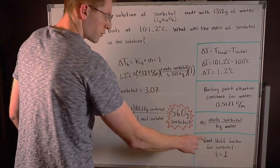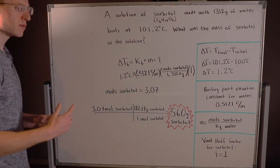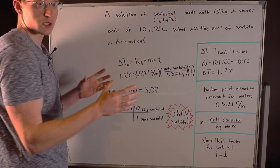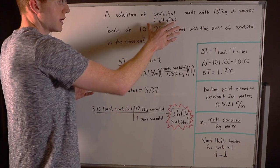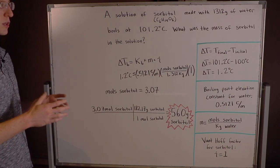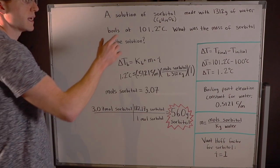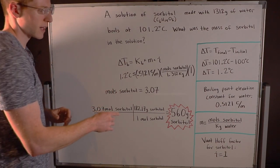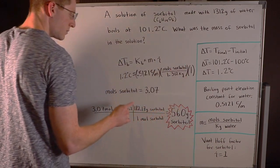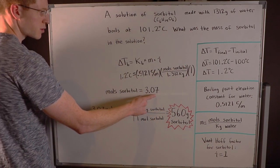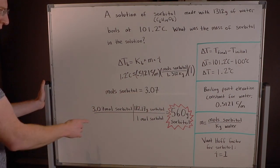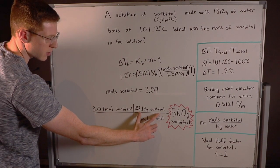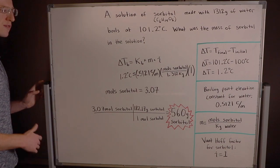The van't Hoff factor here for sorbitol is 1. You can think about the van't Hoff factor as basically the number of things that your solute is going to split up into. When you put sorbitol into water, it's not going to split up into multiple molecules or ions. Something like NaCl, table salt, splits up into two things, Na+ and Cl-, so NaCl's van't Hoff factor would be 2, but in this case it's 1. So I went ahead and solved for the moles of sorbitol here, 3.07, and then I simply converted moles of sorbitol to grams of sorbitol by multiplying by sorbitol's molecular weight, and I found that we must have had 560 grams of sorbitol in this solution.